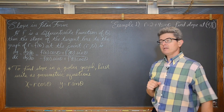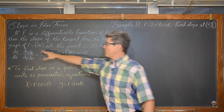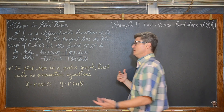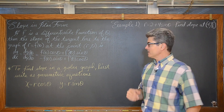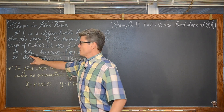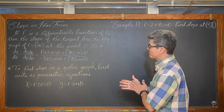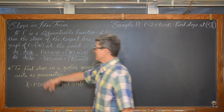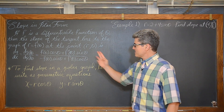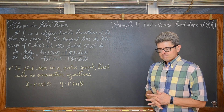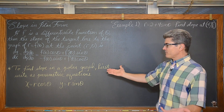So we have here the slope in polar form. If f is a differentiable function of theta, then the slope of the tangent line to the graph r equals f of theta — so r is basically in terms of theta — at the point r theta. That derivative dy/dx is found by doing the derivative of y with respect to theta: f of theta times cosine theta plus f prime of theta cosine theta. We are just going to follow this tip.